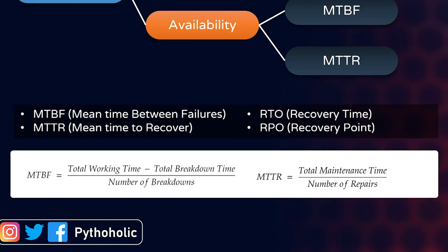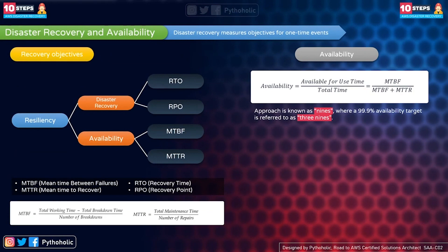For example, if your application had a total working time of 100 hours, with 5 hours of breakdown time — periods where users couldn't access the application — and 10 total breakdowns, then MTBF = (100 - 5) / 10 = 9.5 hours. Similarly, MTTR is the total time spent bringing up your services divided by the number of repairs. If you spent 10 hours in maintenance across 5 repairs, MTTR = 10 / 5 = 2 hours.